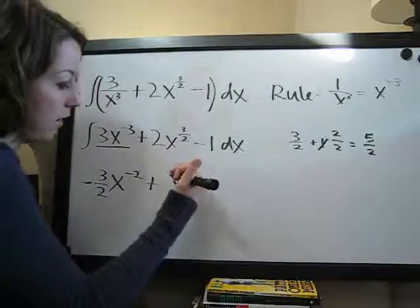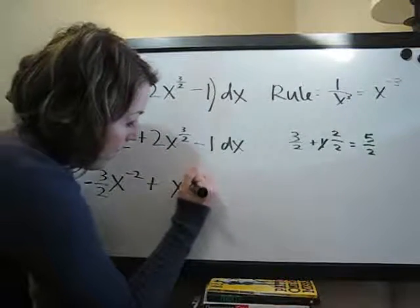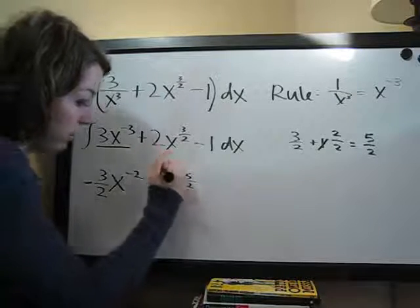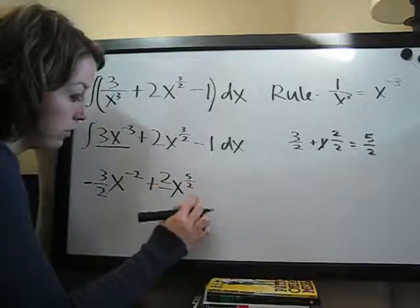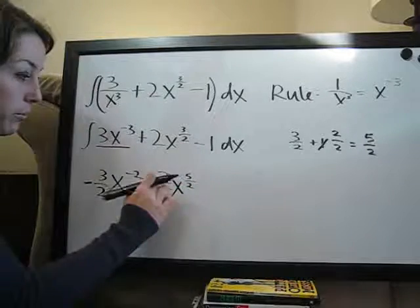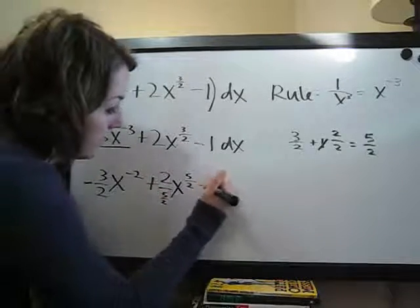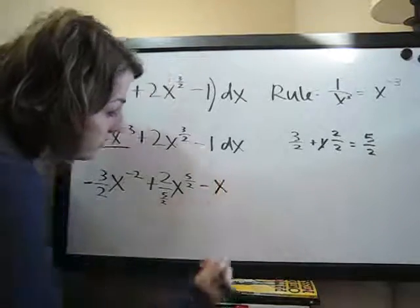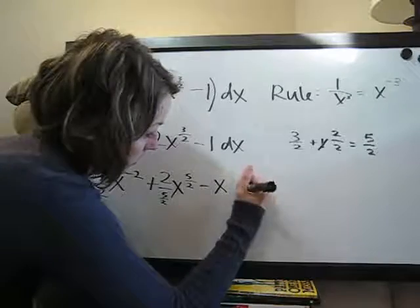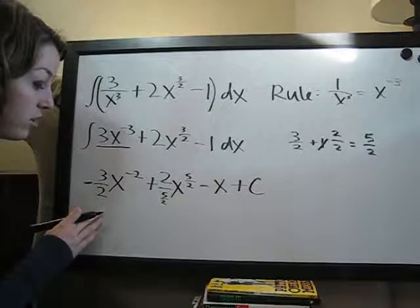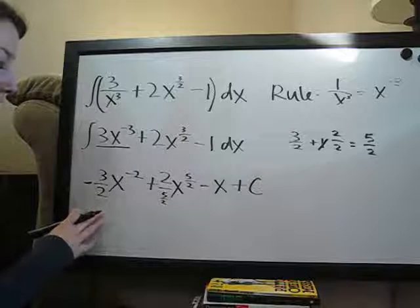So adding 1 to this exponent gives us 5 halves. And then divide the coefficient here, 2, over the new exponent, 5 halves. Then minus the antiderivative of 1 is always x, as we know. And then of course plus c for a constant. So we have our antiderivative written out, but we need to simplify some things.